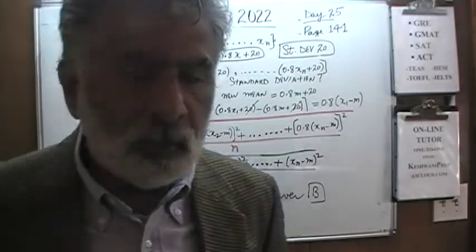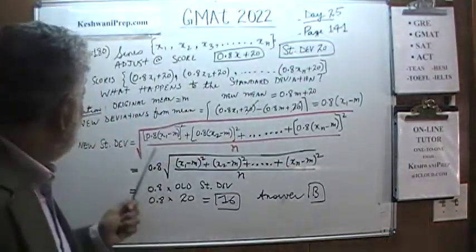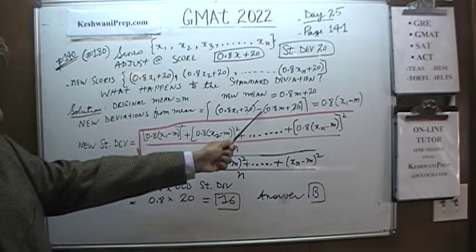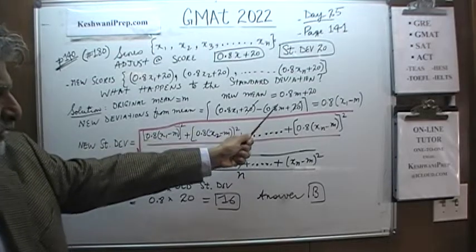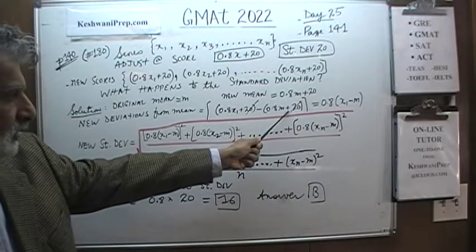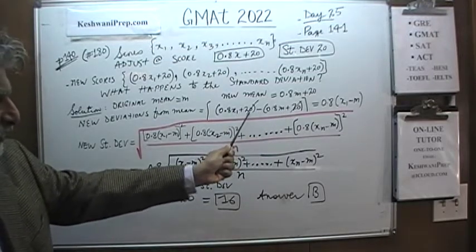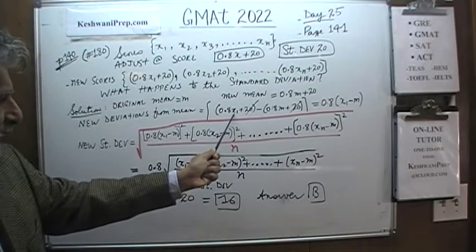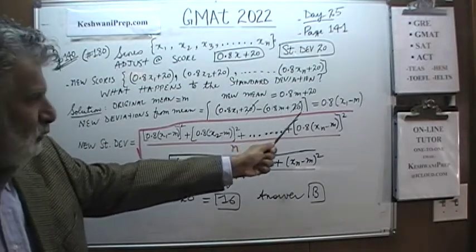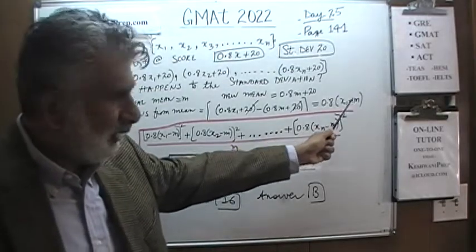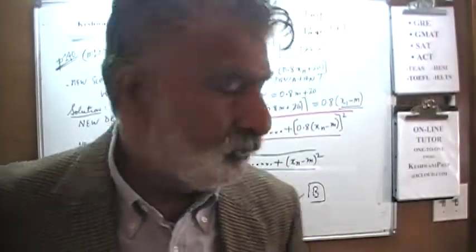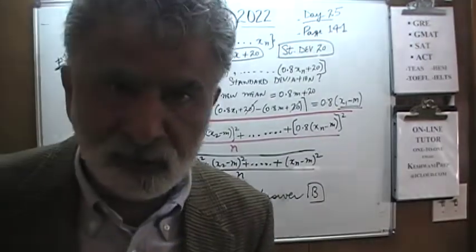Before we can find the new standard deviation, we need to find the deviation of each score from the new mean. The new deviation is the new score, 0.8·x1 + 20, minus the new mean, 0.8m + 20. When we expand the parentheses, the 20s drop out, leaving 0.8·x1 − 0.8m, which equals 0.8·(x1 − m). And x1 − m is simply the old deviation.